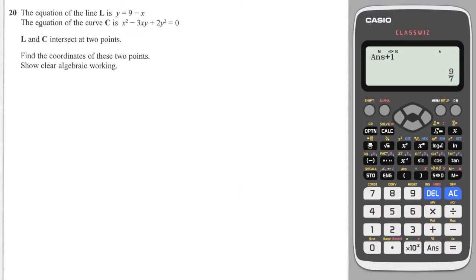Next question. And we have a line, and we have a curve. And we're asked to show what the coordinates are of the intersection of these two. Well, essentially, this is just a solve a simultaneous equation question, but a bit fancier in the way it's worded. So the linear one is already y equals, so that's great. So I'm just going to replace the y's in the quadratic one with 9 minus x. So I write x squared minus 3x, not y anymore, but 9 minus x, plus 2 lots of, not y anymore, but 9 minus x squared, equals 0.